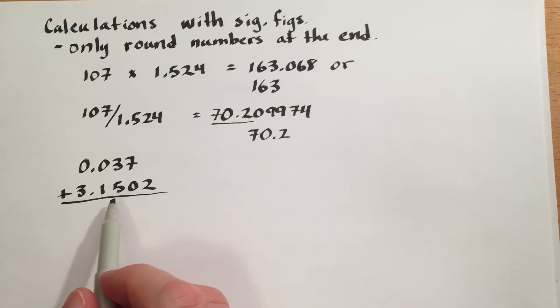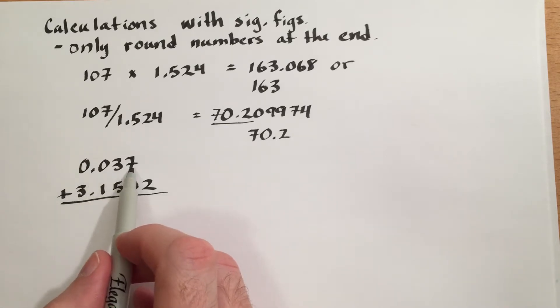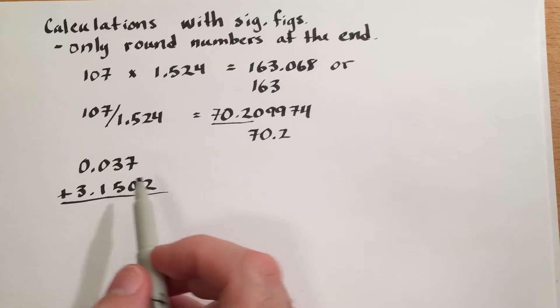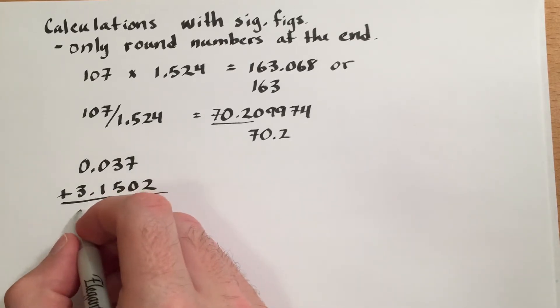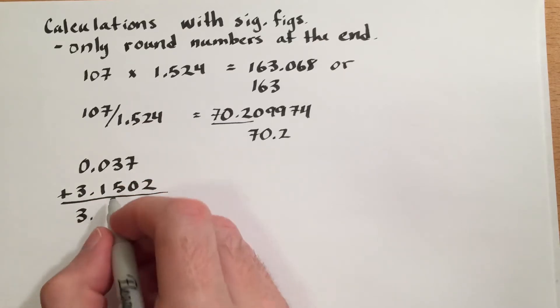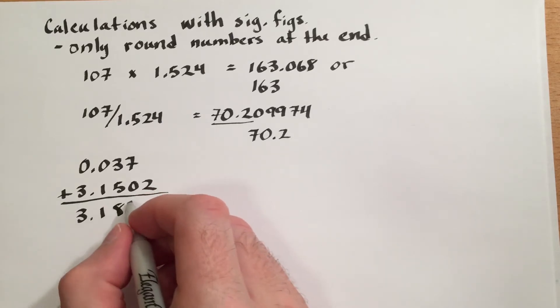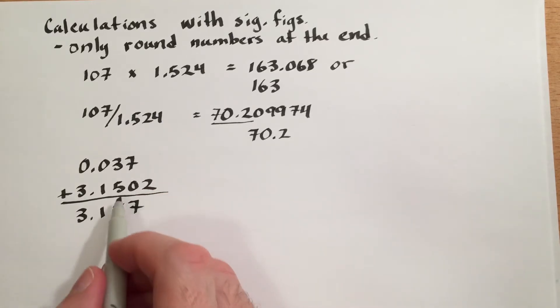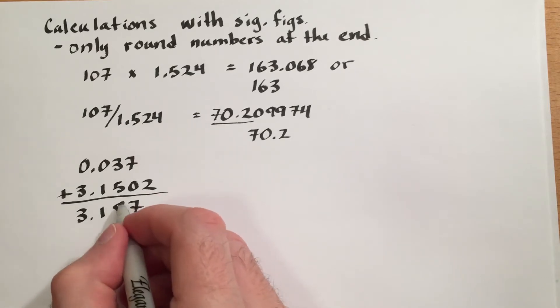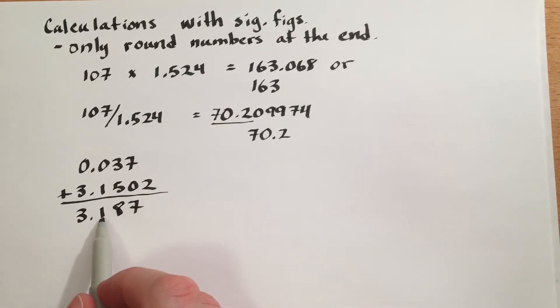Therefore, the minimum number of decimal places is in the 0.037, which is 3, and we should report our answer to only 3 decimal places. So if we add that and round to 3 places, we should get 3.187. Our answer has 4 significant digits, but more importantly, it has 3 digits in the decimal places.